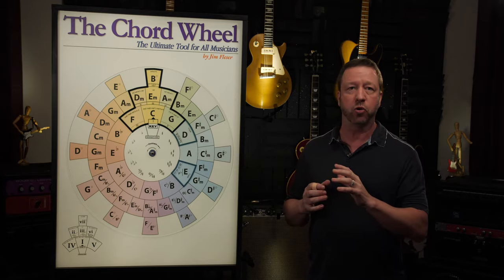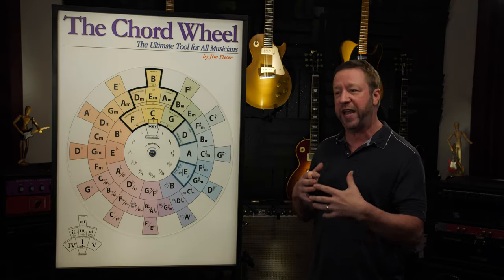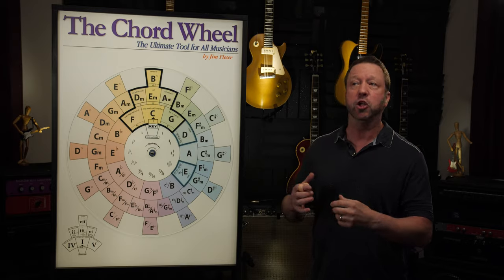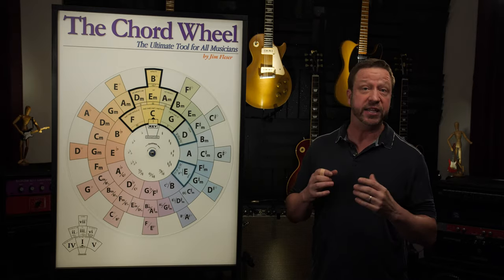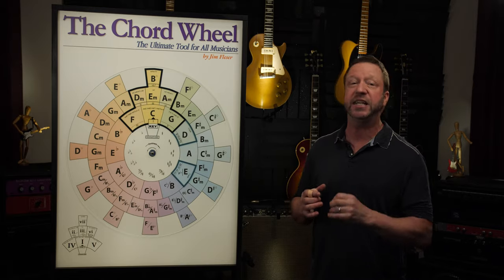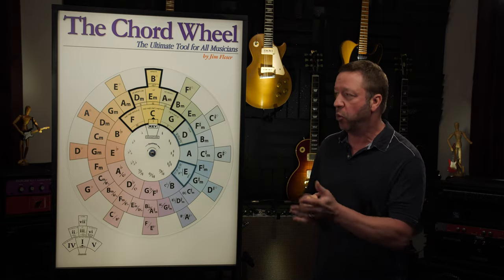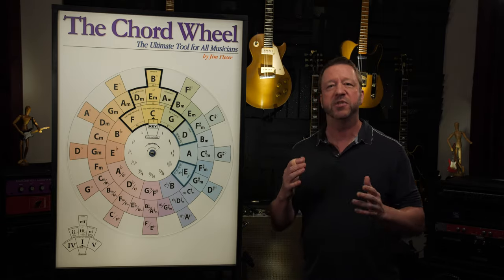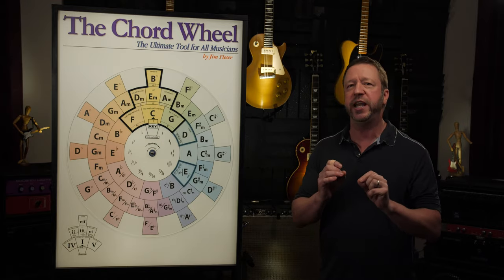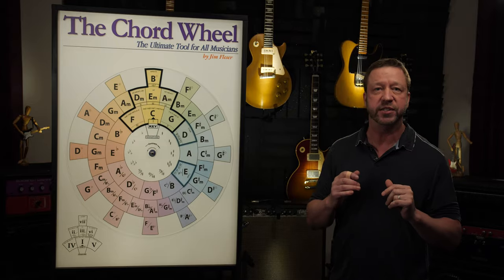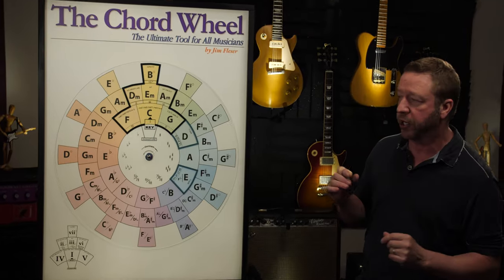One of the great things about the chord wheel is it makes it very easy once you've analyzed the progression to also transpose it. So let's say, for example, you have a vocalist that comes in that needs it at a different range. It's easy with the chord wheel to transpose that progression. So we walk through it slowly that time. Let's pick up the speed a little bit. What are the 38 chords that a composer might use in the three different categories in the key of F instead? And this time we'll go through it a little bit quicker.